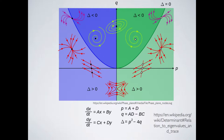We imagine the linearization of our Jacobian with two equations: ẋ = ax + by, ẏ = cx + dy. Then p is the trace (a + d), q is the determinant (ad − bc), and delta indicates whether the characteristic equation has imaginary roots. Delta separates rotating flows from non-rotating flows: when delta is positive the flows are not rotating, when delta is negative the flows are rotating.